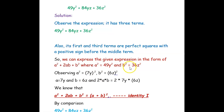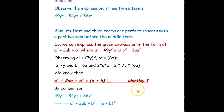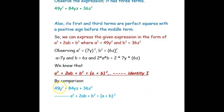Since b squared is 36z squared, we can rewrite it as (6z) whole squared, so b is 6z. Now, 2 into a into b is 2 into 7y into 6z. We know the identity a squared plus 2ab plus b squared is (a + b) whole squared — Identity 1. Now we compare our given expression: 49y squared plus 84yz plus 36z squared is nothing but a squared plus 2ab plus b squared.